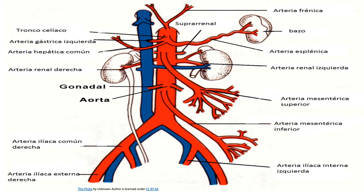The renal arteries are paired visceral arteries that arise laterally between the levels of L1 and L2, supplying oxygen-rich blood to the kidneys. The gonadal arteries are paired visceral arteries arising laterally at the level of L2. Note that the male gonadal artery is referred to as the testicular artery, while in females it is called the ovarian artery.